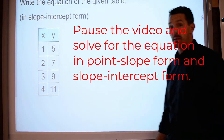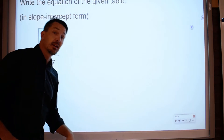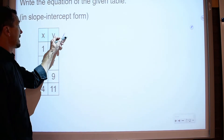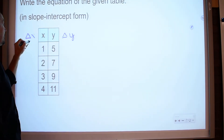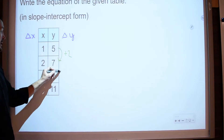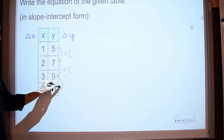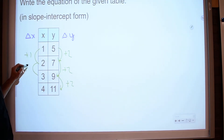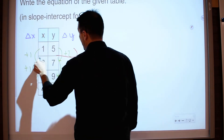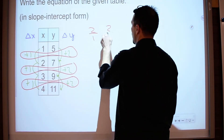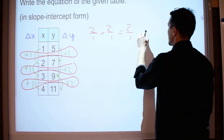I'm assuming that you paused and you did it. Remember, you're not passively watching — you're actively taking notes and trying the problem so that when you go to do the activity, you have confidence. All right. So the change in y and the change in x is what I'm looking for. From 5 to 7 is plus 2. 7 to 9 is plus 2. 9 to 11 is plus 2. That all looks nice. 1 to 2 is plus 1. 2 to 3 is plus 1. 3 to 4 is plus 1.